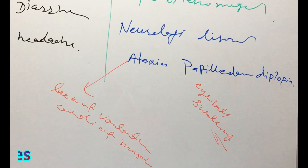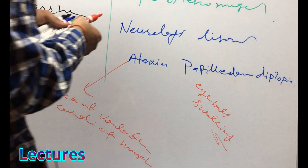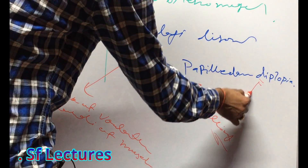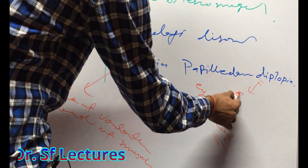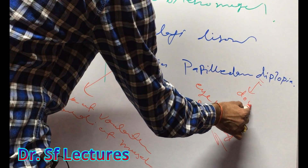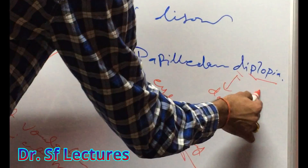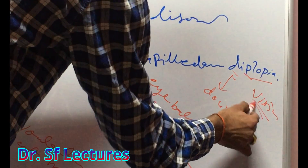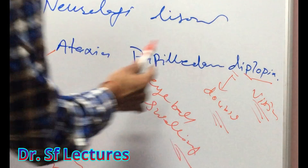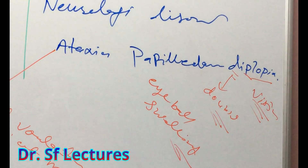Diplopia — 'di' means double and 'plopia' means vision. So the patient will see double. That is diplopia.